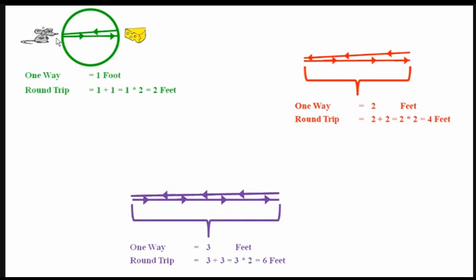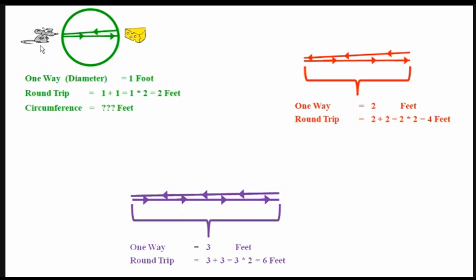Welcome to part two of taking the mystery out of pie. When we left Mac at the end of part one, he was feeling pretty fat and happy. He had three lumps of cheese in his belly. He was feeling pretty smart, answering all these problems, and had pretty much figured out this whole cheese thing. But then one morning, he wakes up and this is what he finds.